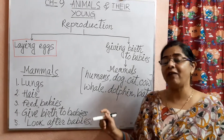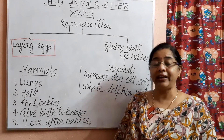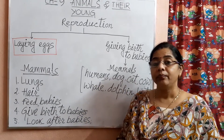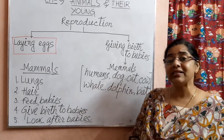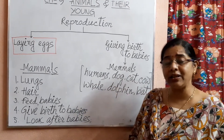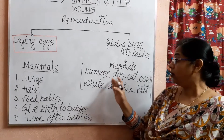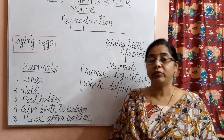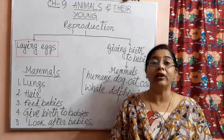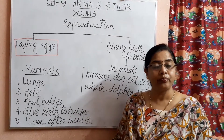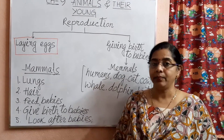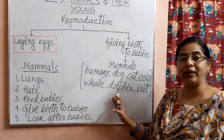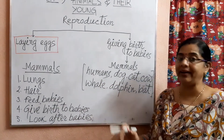Mammals have four limbs. We humans have two hands and two legs. Wild and domestic animals like dog, cat, cow, lion, tiger, etc. also have four fore limbs and hind limbs. Exceptions include whales, dolphins, and bats.